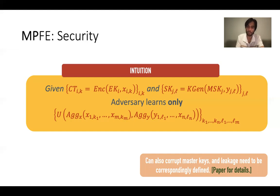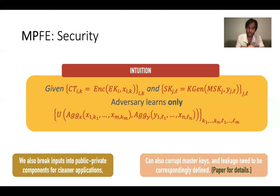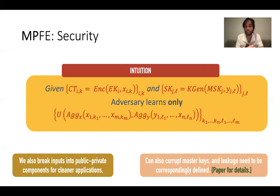We also allow corrupting master keys or encryption keys, and we define the corresponding allowed leakage to the adversary. For more details, we refer to the paper. Additionally, we break the inputs in the ciphertexts and secret keys into two domains — a public part and a private part — which makes a cleaner framework for eventual applications such as partially hiding function encryption.